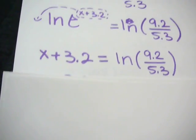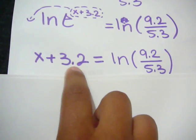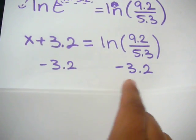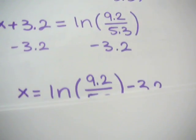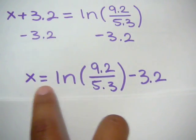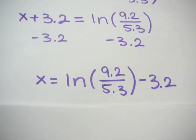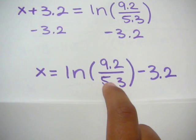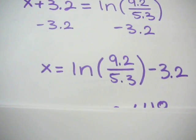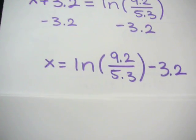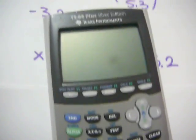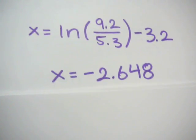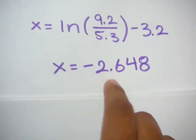Now you have to get x by itself, so you need to get rid of the 3.2. All you do is subtract 3.2 on both sides. That leaves you with x equals the natural log of 9.2 over 5.3 minus 3.2. If you plug that into your TI-84 or TI-83, or even a Casio, you will get x equals negative 2.648.